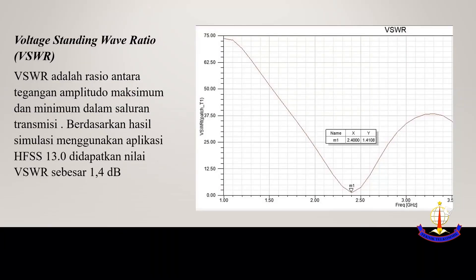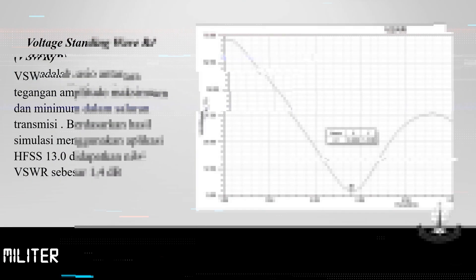Voltage Standing Wave Ratio (VSWR) adalah rasio antara tegangan amplitudo maksimum dan minimum dalam saluran transmisi. Ini adalah grafik VSWR dari aplikasi simulasi. Didapatkan nilai VSWR sebesar 1,4. (VSWR is the ratio between the maximum and minimum voltage amplitude in a transmission line. The simulation graph shows a VSWR value of 1.4.)